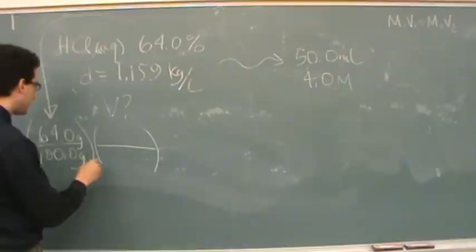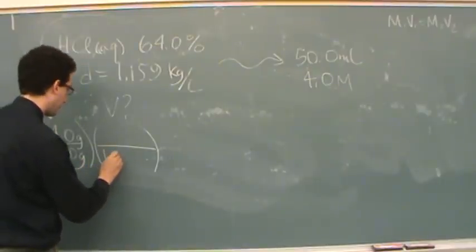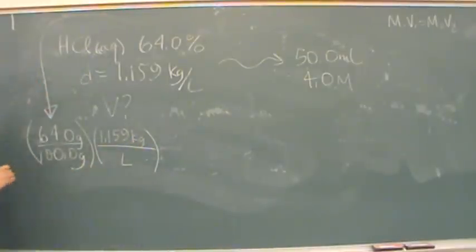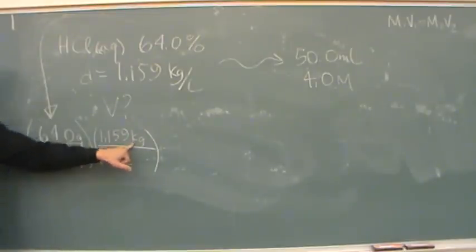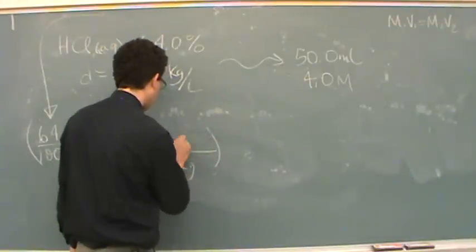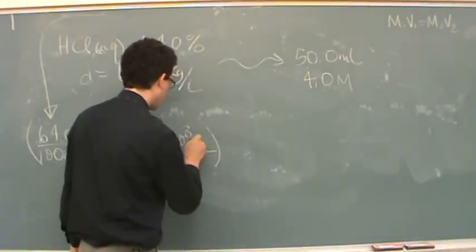So the density tells us I have 1.159 kilograms per liter. The density, the thing you'll want to remember, is it's a solution density. And if this is 64 grams of HCl for 100 grams of solution, I want this grams to cancel with kilograms. So I need one more step where I put kilograms per thousand grams.